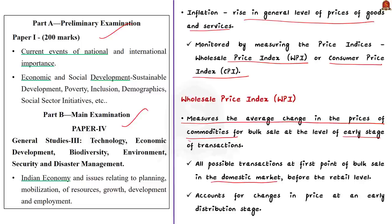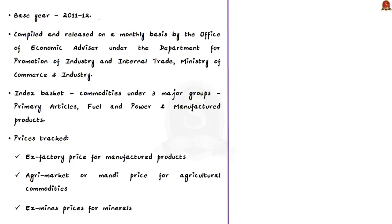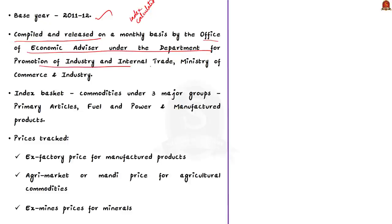The universe of WPI comprises all possible transactions at the first point of bulk sale in the domestic market, but before the retail level. Hence WPI accounts for changes in prices at every early distribution stage. WPI is calculated using the base year 2011–12. The base year or base period refers to the year in which an index number series begins to be calculated. WPI is compiled and released by the Office of Economic Advisor (OEA), which is under the Department for Promotion of Industry and Internal Trade, and it is released on a monthly basis.